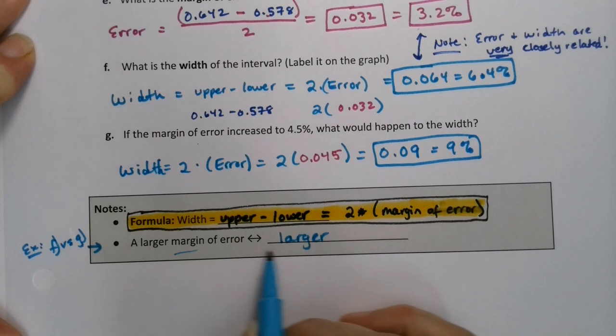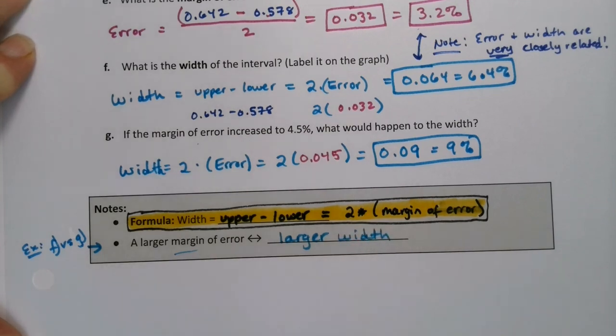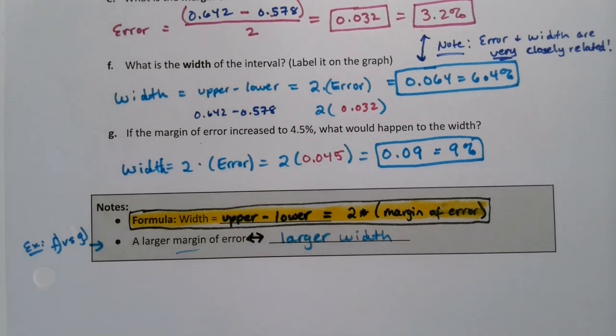Because the width and the error are essentially interchangeable. I mean, the error is just half of the width. The width is twice the error. They're very, very, very closely related.